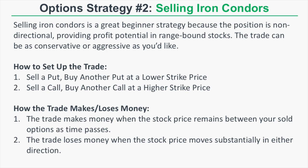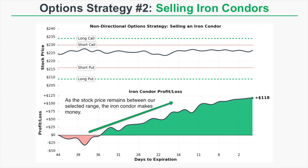The trade loses money when the stock price moves substantially in either direction. Let's look at an example iron condor trade. On the top part of this graph we're looking at the stock price changes relative to our options. In this position we're selling the 216 put and buying the 209 put for our short put spread, and selling the 230 call and buying the 234 call for our short call spread.